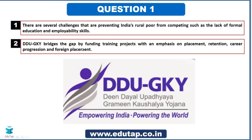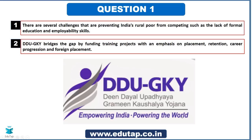This program bridges the gap between formal education and the skills required for placement. It concentrates on the rural poor and ensures those people are given appropriate placement training and a good job at the end. This is the basic motive of Deen Dayal Upadhyaya Grameen Kaushalya Yojana. The tagline of this scheme is: 'Empowering India and Powering the World.'